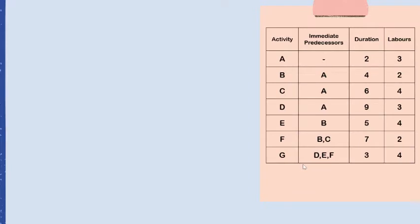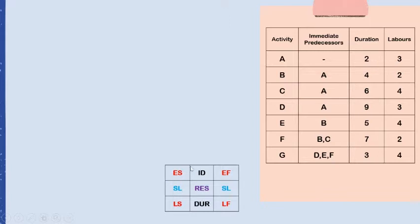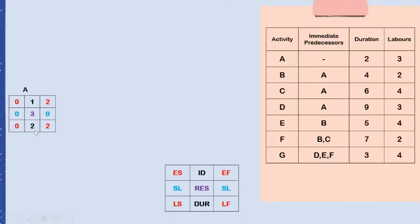Now we will construct the project network diagram. Based on the table on the right side, we can get all the information about the project. We start with activity A because it does not have any predecessors. So the earliest start of activity A is zero, the duration is two, and the earliest finish is day two, calculated from earliest start plus duration.